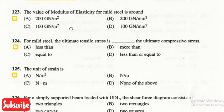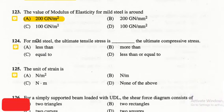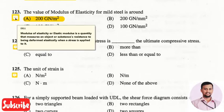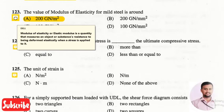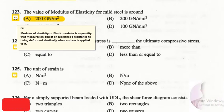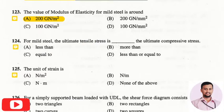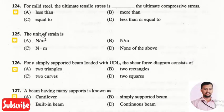The next question is: the modulus of elasticity for mild steel is around? The right answer is option A, 200 giganewton per meter square. The modulus of elasticity or elastic modulus is a quantity that measures an object or substance's resistance to being deformed elastically when a stress is applied to it.